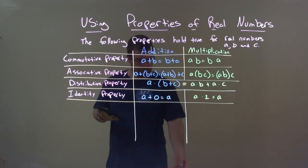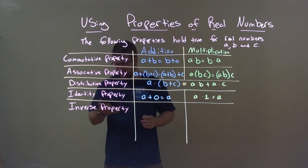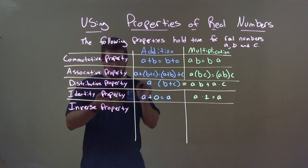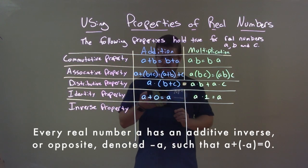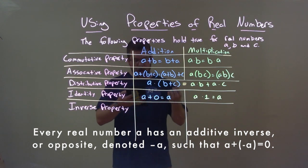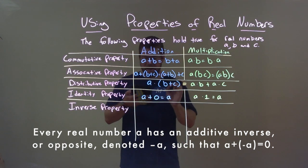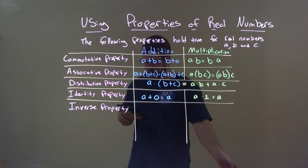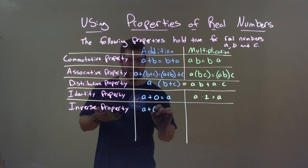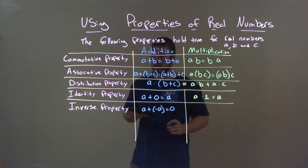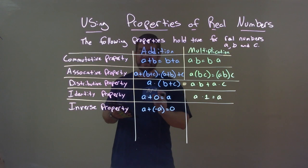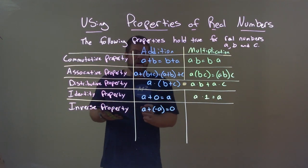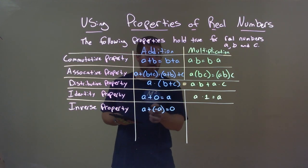And lastly, we have the inverse property. Every real number A has an additive inverse or opposite, denoted negative A, such that A plus negative A equals zero. There's a real number out there that if you add its inverse, you will get zero.